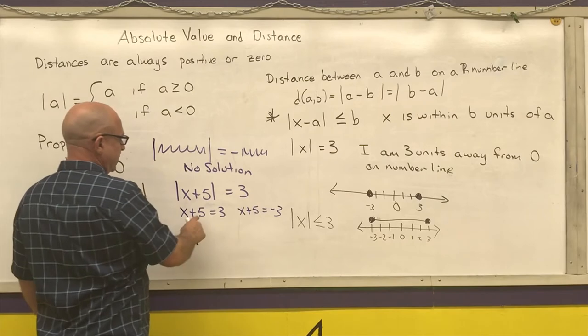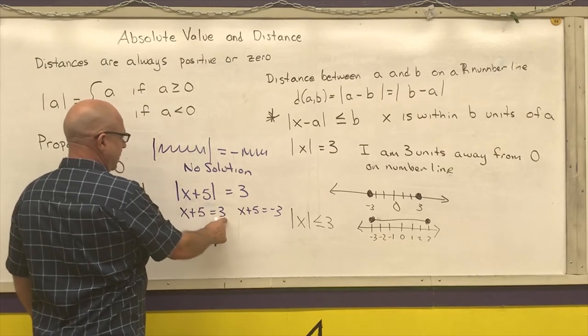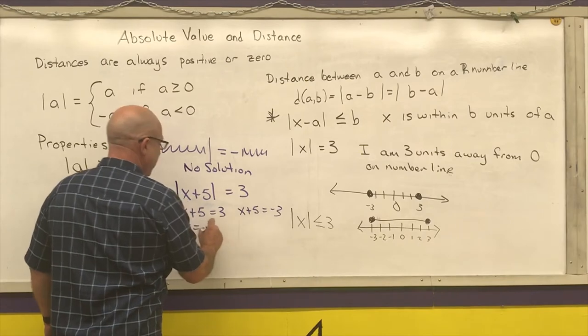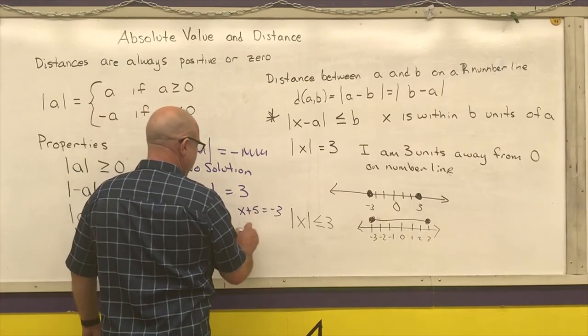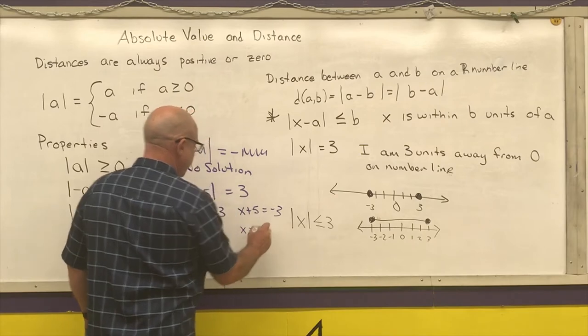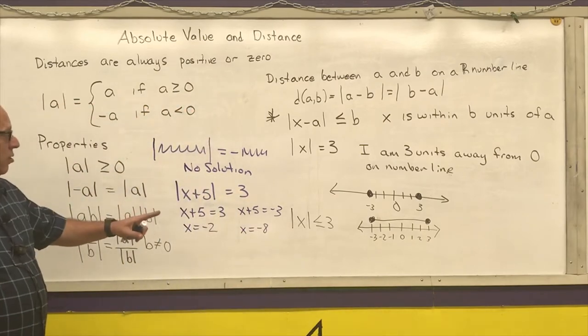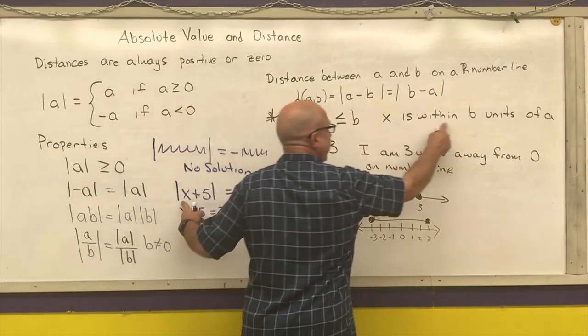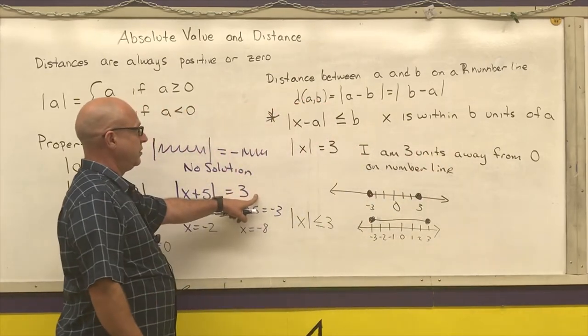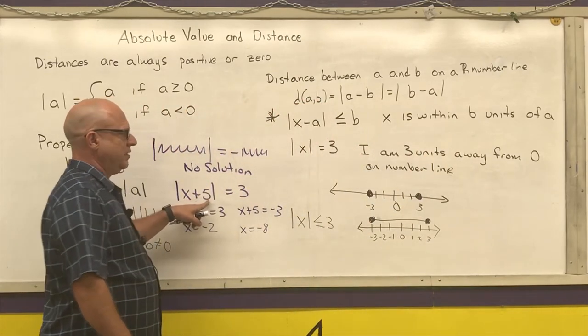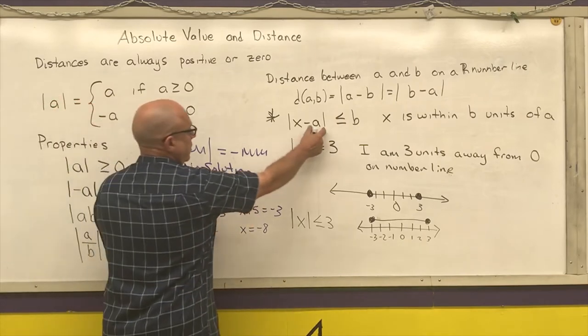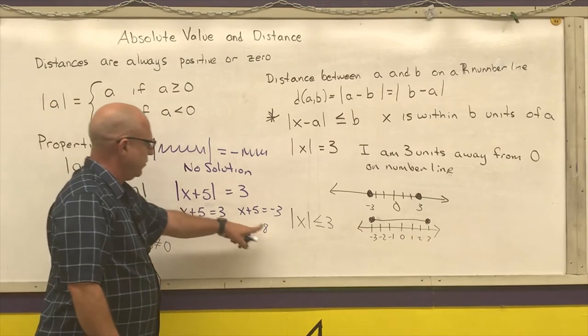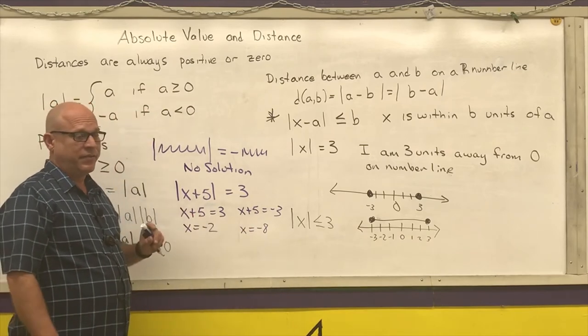And that comes directly from our definition of absolute value. You solve both of these. I'm going to subtract five from this one and I get X equals negative two. I'm going to subtract five from this one and I get X equals negative eight. And I said in words, X is within three units of the opposite of this number, which is five. The opposite would be negative five, and both of these numbers are within three units of negative five.